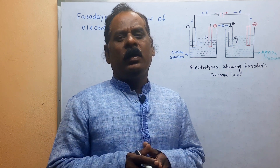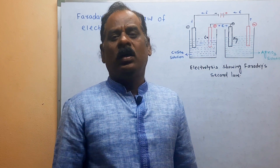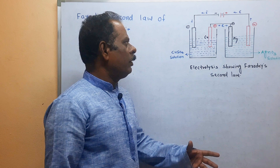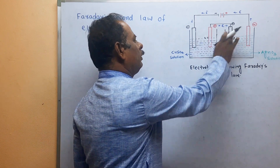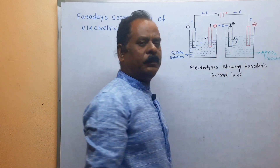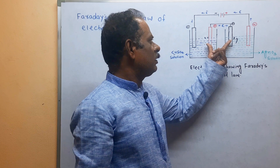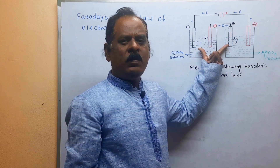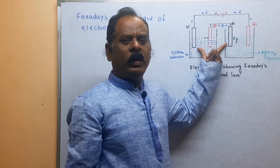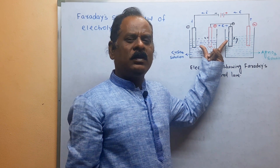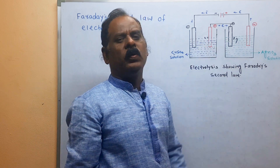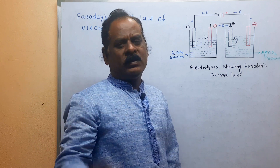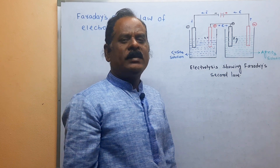But in the second law, he took two or more than two electrolytic solutions arranged in series. As you can see on the blackboard, here I have taken two types of solution: one is the copper sulfate solution and the second is the silver nitrate solution. These two electrolytic solutions are arranged in series, connected in series, and electricity is passed through them. The same quantity of electricity passes through both electrolytes, and the amount of substance deposited or liberated on the respective electrode is directly proportional to the chemical equivalent or equivalent weight of the substance. This law is called Faraday's second law of electrolysis.